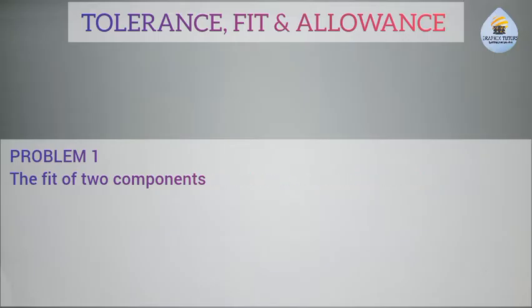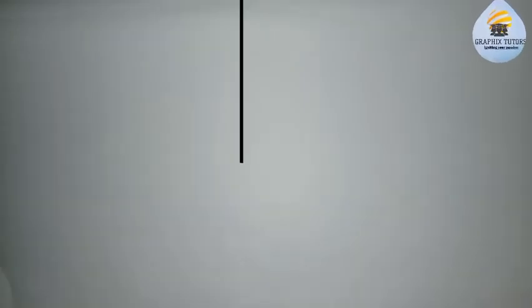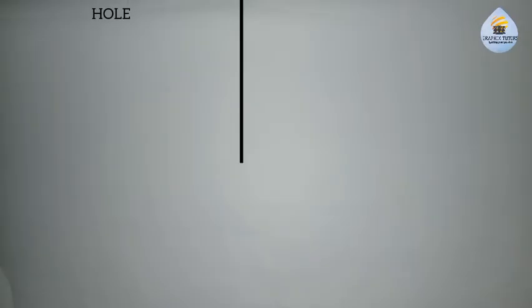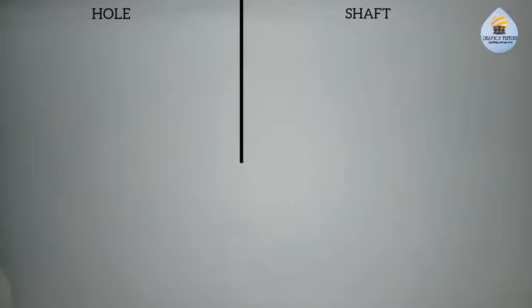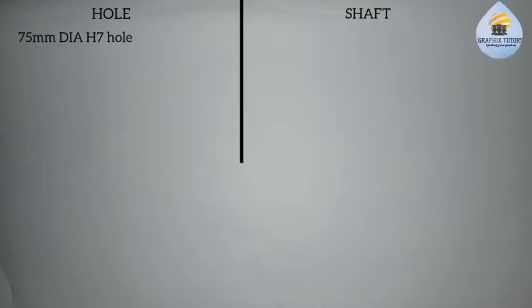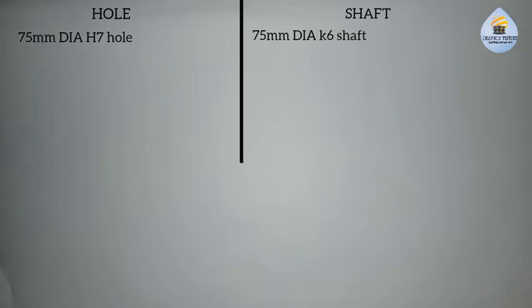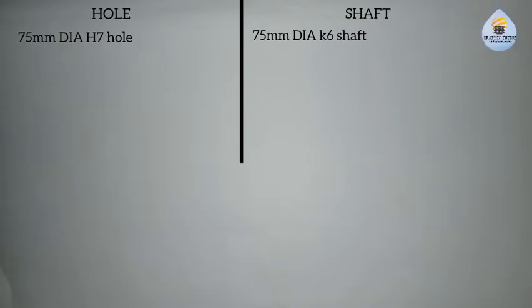What you do is draw a table. The left-hand side of the table should be for the hole and the right-hand side should be for the shaft. On the left we have the 75 millimeter diameter H7 hole, and on the right we have the 75 millimeter diameter K6 shaft.